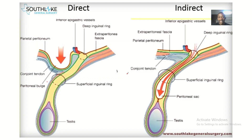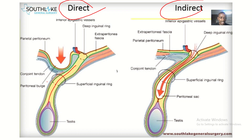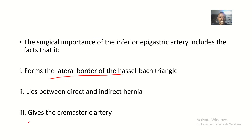Next, it lies between the direct and indirect hernia. Here we have the direct hernia and this is the indirect hernia — something herniating into the testes. You can see that the inferior epigastric vessels, that's the inferior epigastric vein and inferior epigastric artery, lie where the hernia is actually starting, whether it's a direct hernia or indirect hernia.